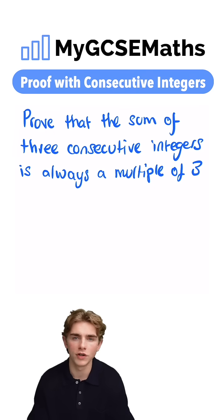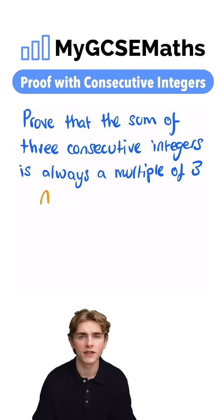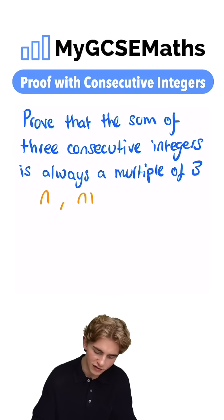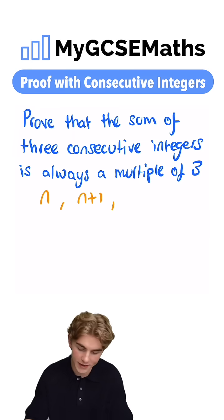To write these in general, what can we do? Well, we're going to call our first integer n. Then the integer after that is going to be n plus one, and the integer after that is going to be n plus two.